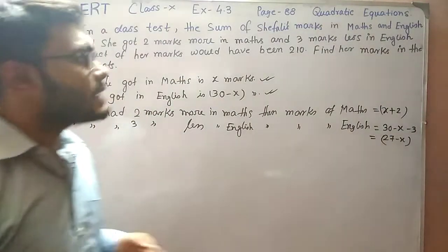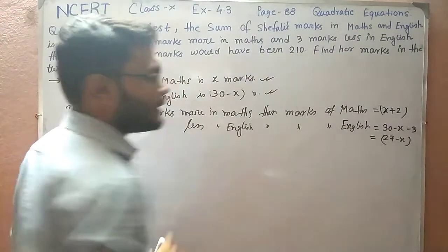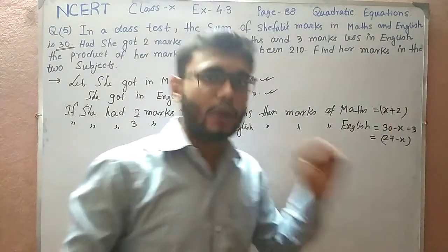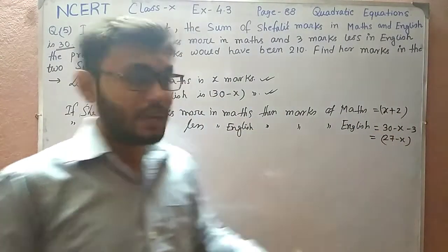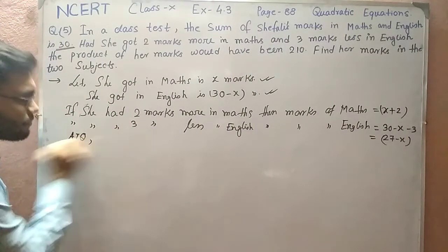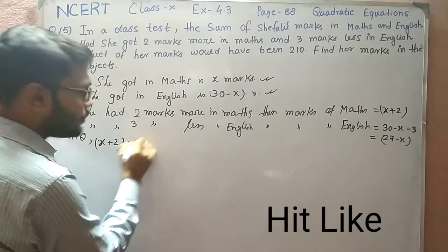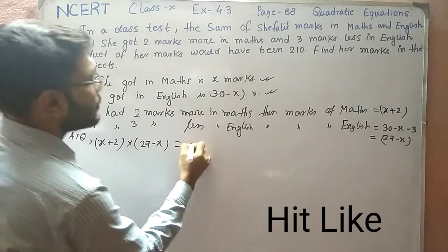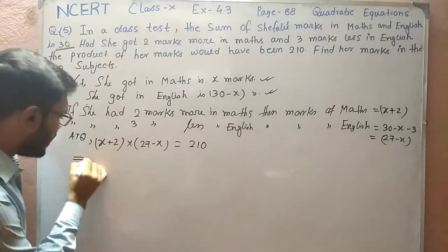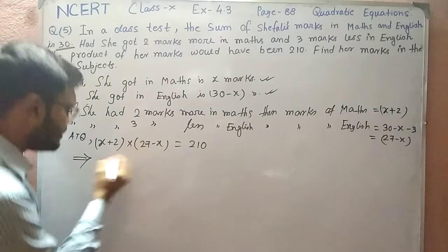The next line says the product of the marks would have been 210. The marks are now x plus 2 and 27 minus x, and according to the question their product should be 210. So we get the equation: (x + 2)(27 - x) = 210. Now we just have to multiply and factorize to get the values of x.